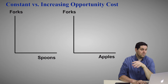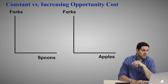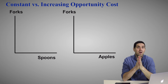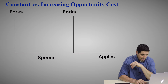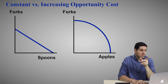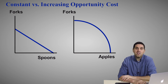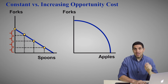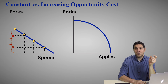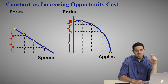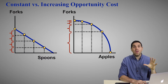Let's see if you understand it with another example: forks and spoons versus forks and apples. Which one is a straight line, and which one is a bowed-out curve? Forks and spoons is a straight line — that's constant opportunity cost. Forks and apples is bowed out — that's increasing opportunity cost. As you produce more spoons, you give up the same amount of forks each time. But as you produce more apples, you give up a little bit of forks, then more forks, then more forks, then a whole lot of forks.